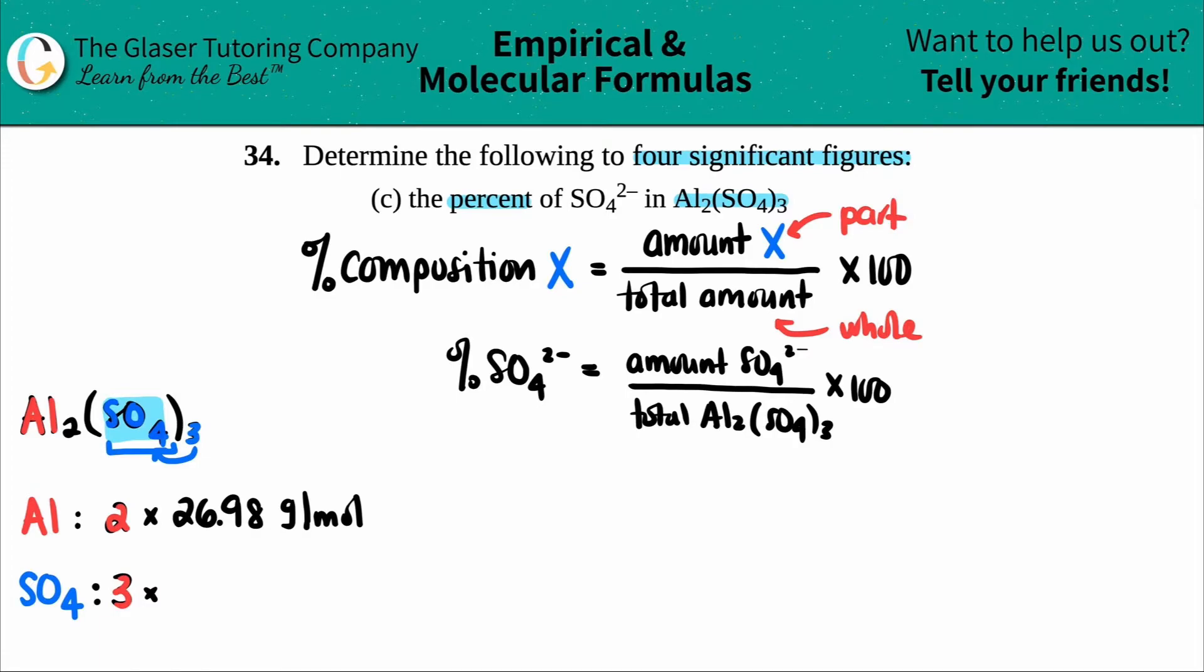For the sulfate, we have to find what S and O is in our piece. I'm going to quickly find this molar mass. How would I find the molar mass of SO₄? There's one sulfur and four oxygen. One sulfur is 32.06 on mine, and I add it to the four oxygens. So four times the oxygen, which is 16.00.